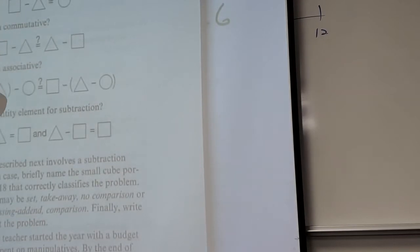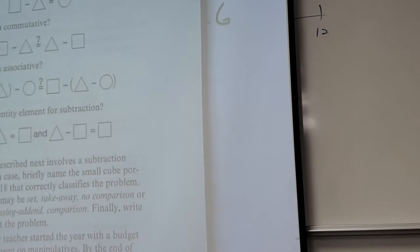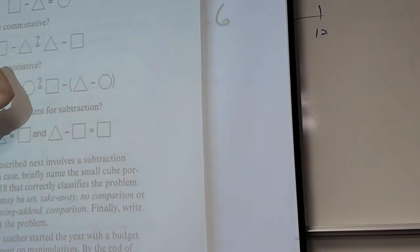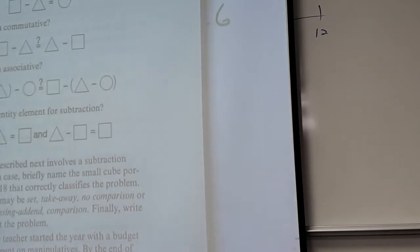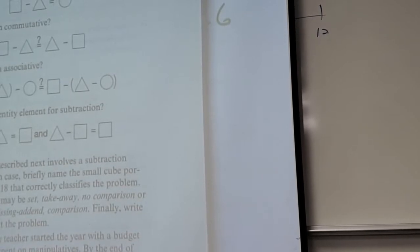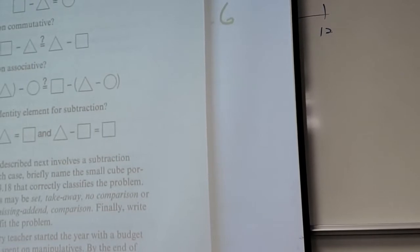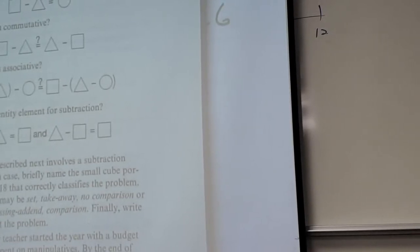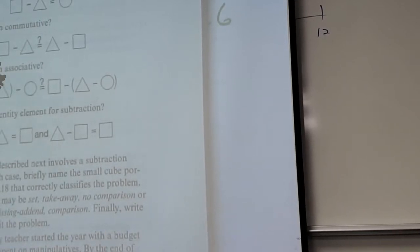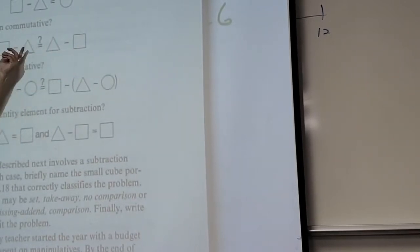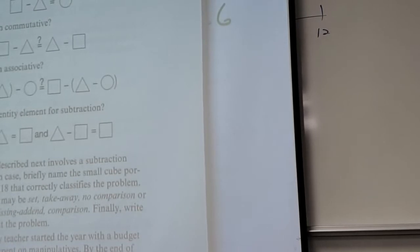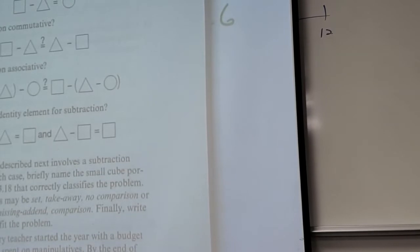Is subtraction closed under whole numbers? No. Why not? If subtraction were commutative, that would mean x minus y equals y minus x. If you say that to a six-year-old they won't understand — but doesn't the shape notation do the same thing? A six-year-old is more comfortable with triangles and squares than with x and y.